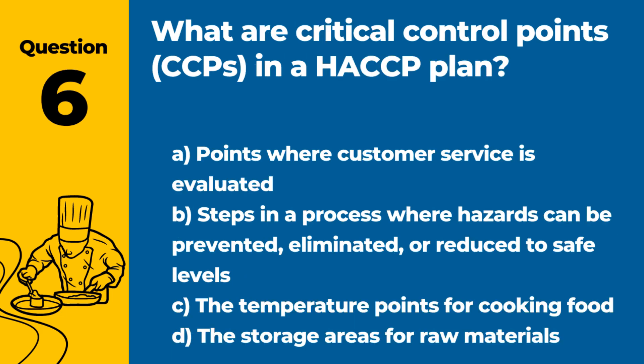Question 6. What are critical control points? Answer: B. Steps in a process where hazards can be prevented, eliminated, or reduced to safe levels. CCPs are essential for controlling food safety hazards in a HACCP plan.